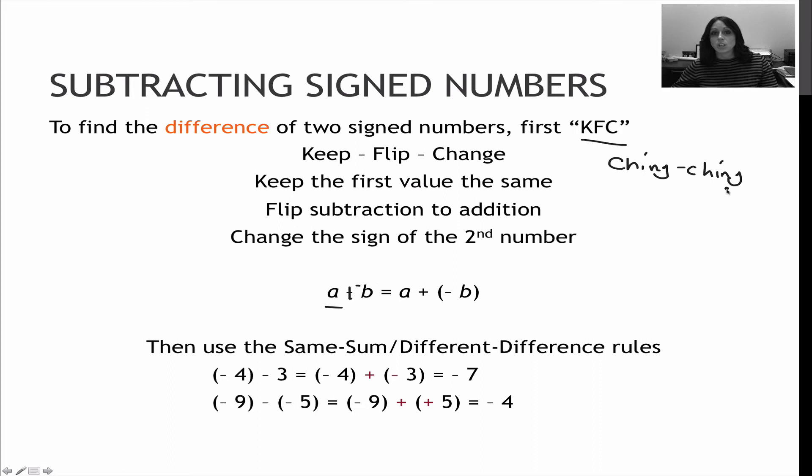Or if you are ching-ching, that means change the sign, change the sign, so it's two changes in a row. Here's a couple of examples: negative 4, and then ching-ching gives me negative 4 plus negative 3. Now I'm just going back to my rule, same sum, different difference. These are the same sign, the sum is 7, they're both negative, so my answer is negative. Or my second one, keep flip change, that gives me negative 9 plus 5, which gives me negative 4.